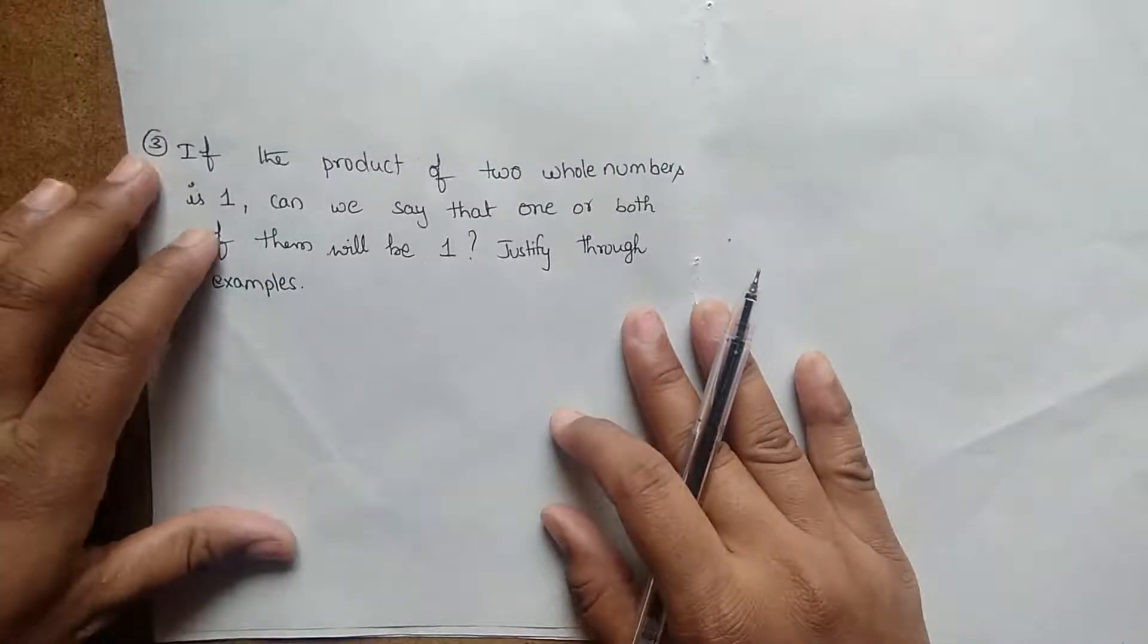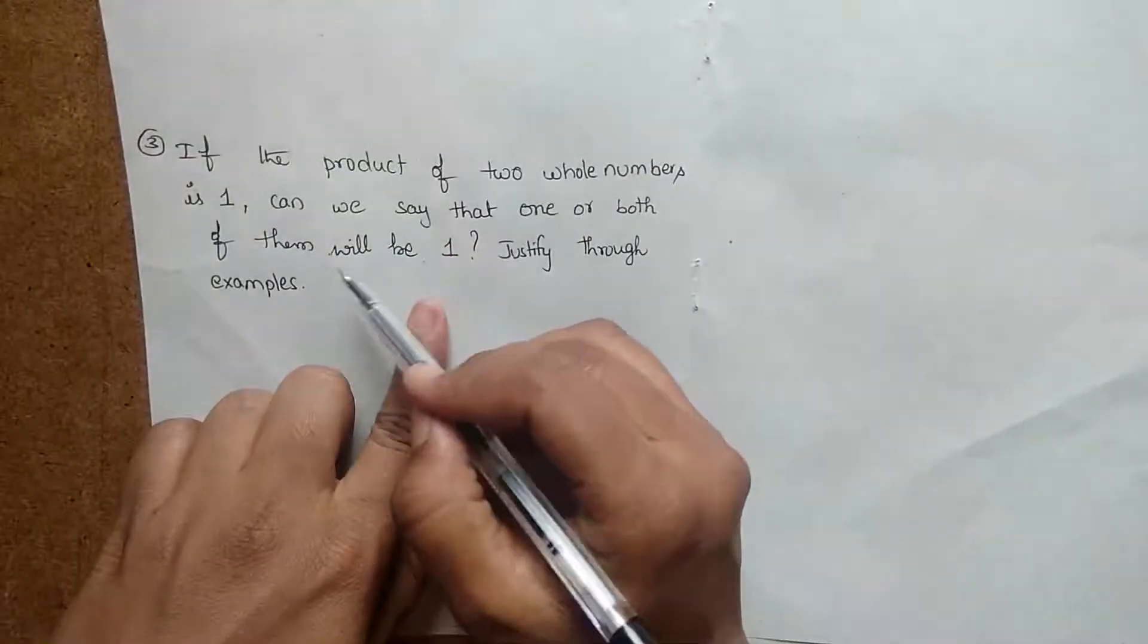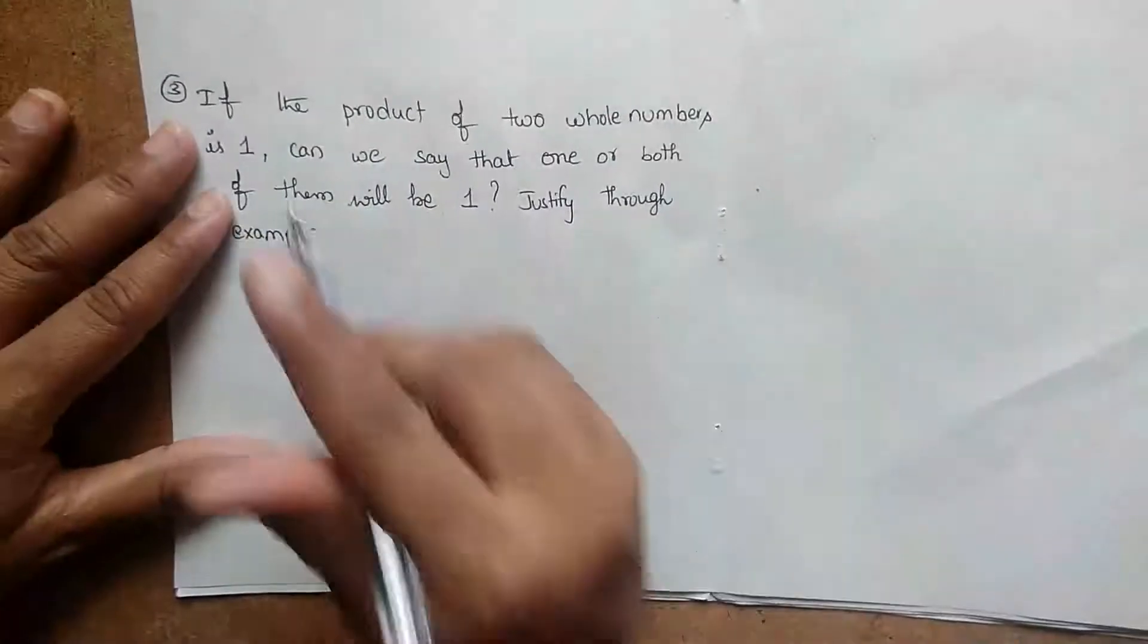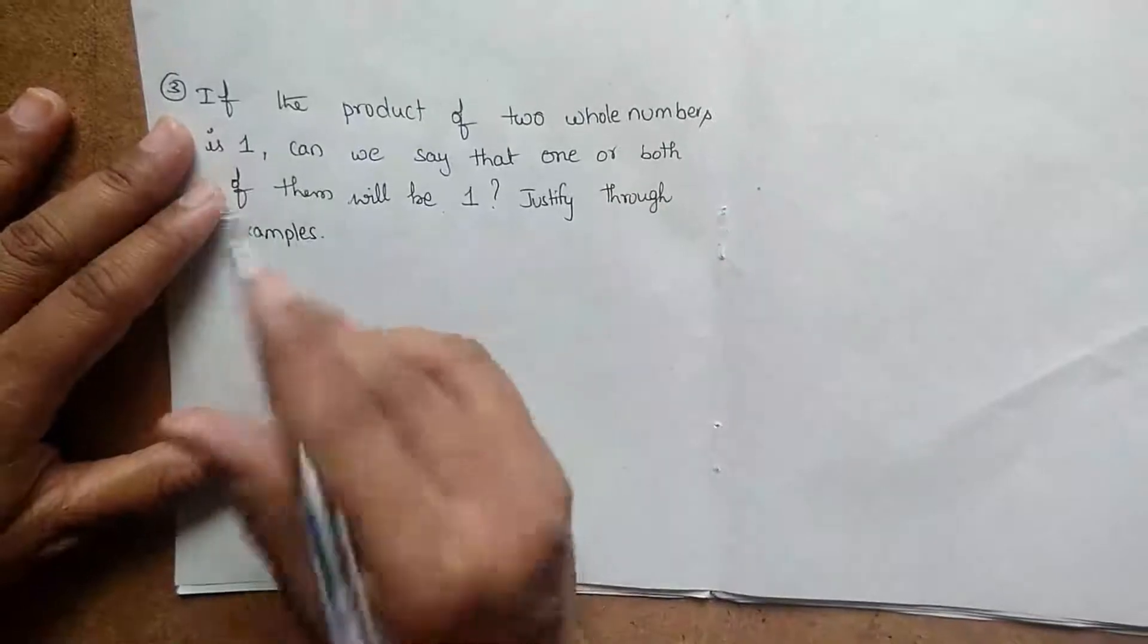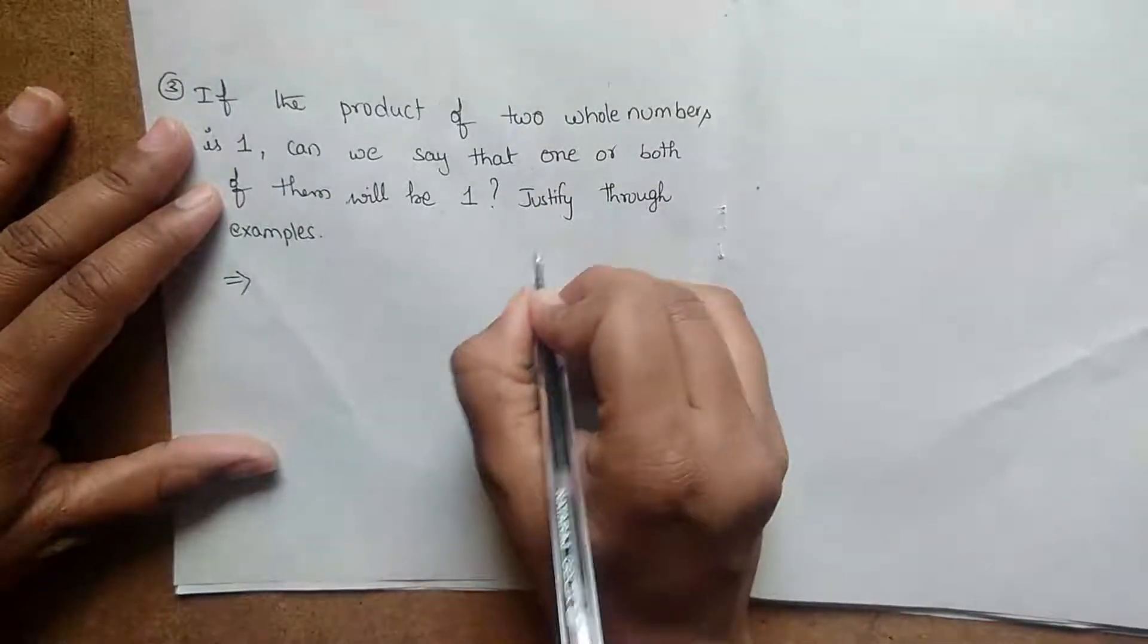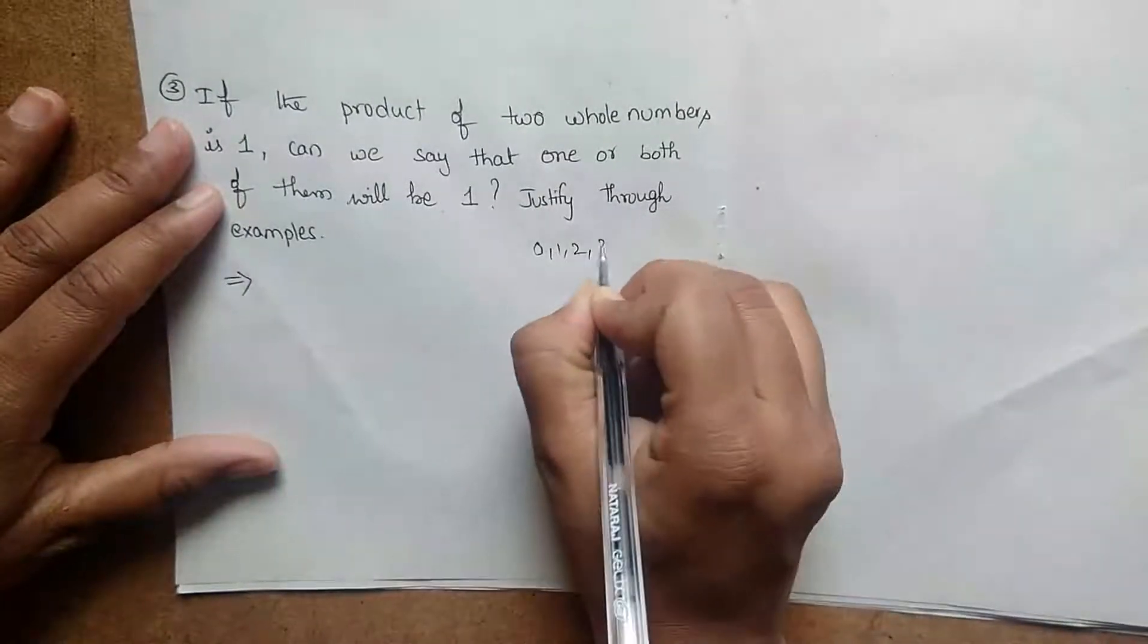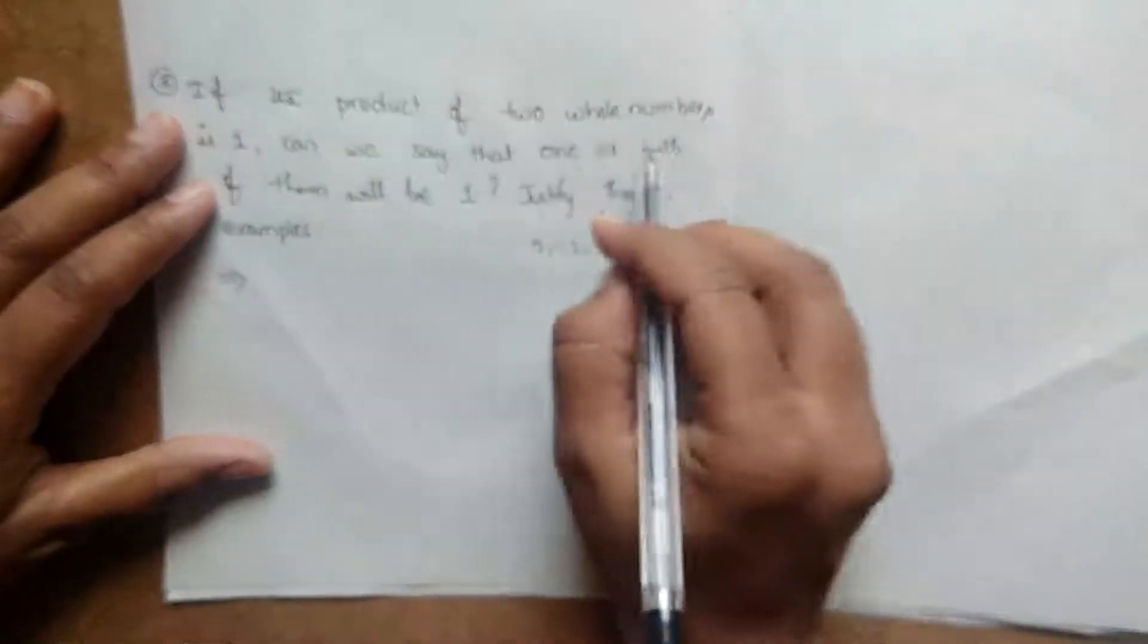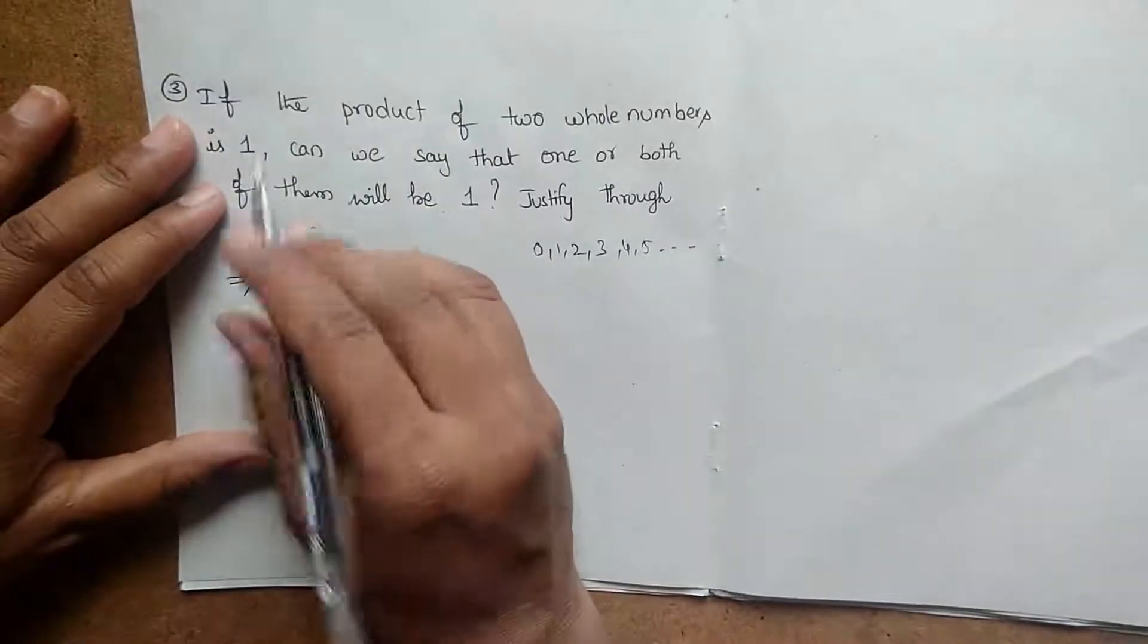Take here, product of two whole numbers is 1. Whole numbers are started from 0, 1, 2, 3, 4, 5 and so on. Here they stated if the product of two whole numbers is 1.